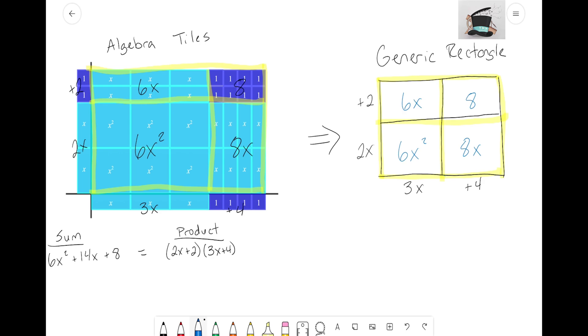Looking at my generic rectangle, I still know my product. My product is still the sides, 2x plus 2 times 3x plus 4. Those two things didn't change, it's still the same product. And more importantly, the sum isn't changing. What's inside, counting up the tiles we see inside, I see that there's 6x² plus 6x and 8x make 14x, and finally we have plus 8 up here in the top.